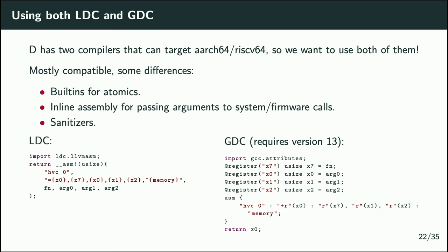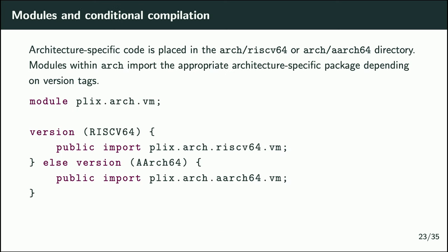Using both compiler toolchains — LDC and GDC — since both support the targets you want, they're mostly compatible with just some slight differences in built-ins and inline assembly syntax. For example, for making system calls you want to store arguments in specific registers: LDC has one syntax for that, GDC has a register keyword. For architecture-specific code, each architecture fills in a subdirectory, and at the higher-level arch directory a module does a public import of the correct sub-module, so architecture-independent code just imports plex.arch.vm and transparently gets the RISC-V or AArch64 version.